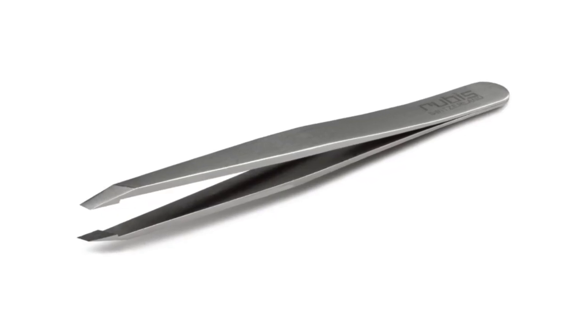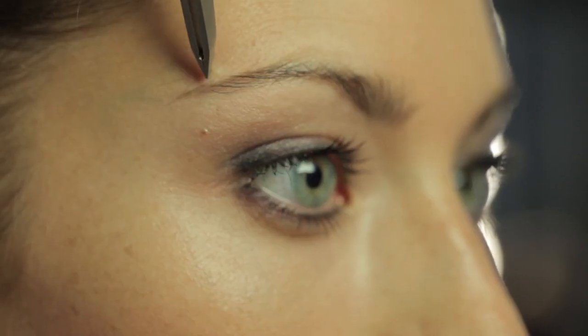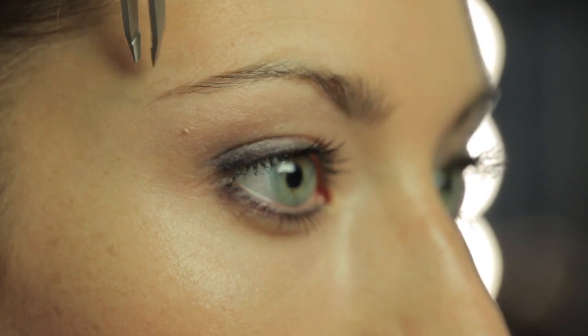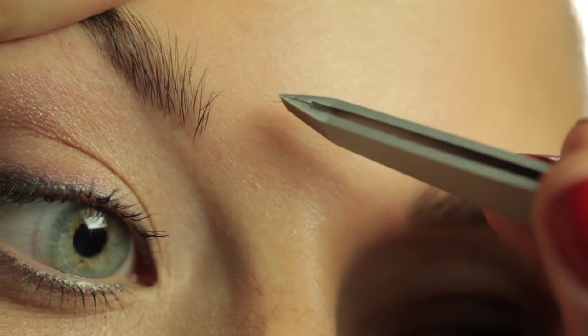Slanted tip tweezers, the classic model. These are perfect for plucking eyebrows and removing other unwanted hairs, even very fine ones and stubbles. The tweezers remove each hair by the root.